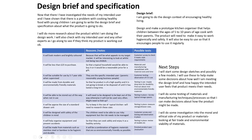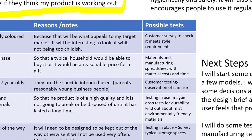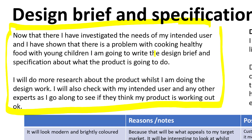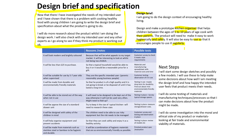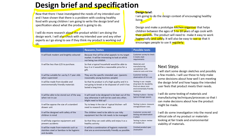I've summarized what I've done and what I'm going to do. In this section I've described why I know there's a problem and what I'm going to do about it — checking with my intended user as I go along to see if it's working out. Then I wrote my design brief, which is the call to action: 'Design and make a prototype kitchen organizer that helps children between the ages of five to ten with cooking with their parents. The product will need to make it easy to work hygienically and safely, and it'll be easy to use so it encourages people to use it regularly to encourage healthy lifestyles.'